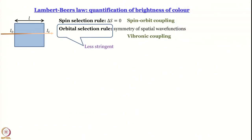First, let us remember what we learned in the last module. There are selection rules. The spin selection rule, which is more stringent, requires that there cannot be any transition between a singlet and a triplet state. The orbital selection rule, which is less stringent, is based on the symmetry of spatial wave functions. The spin selection rule can break down because of spin-orbit coupling. The orbital selection rule can break down by vibronic coupling. So all those bands you saw are actually vibronic bands — they involve not only electronic levels but also vibrational levels.